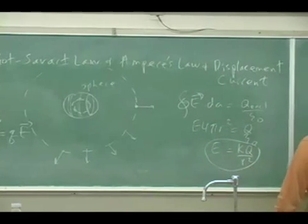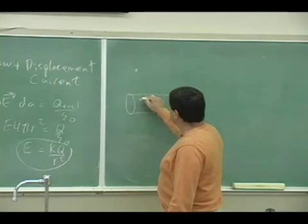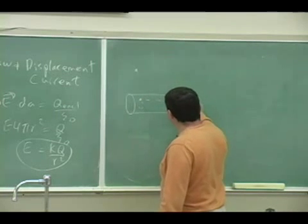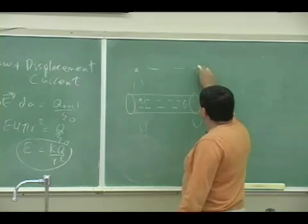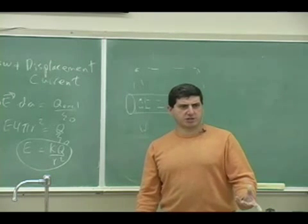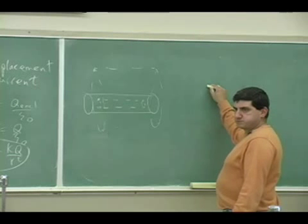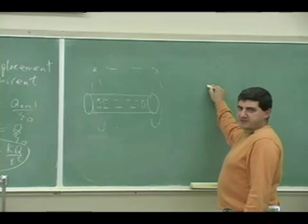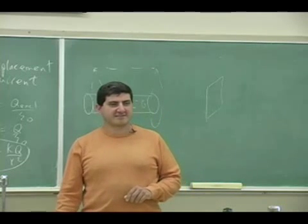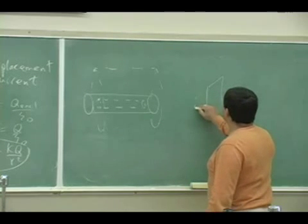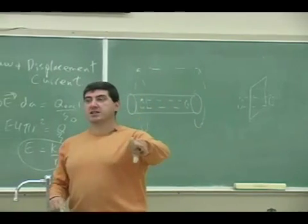Then the next kind of symmetry is cylindrical symmetry — how do you find the electric field here? You use a little Gaussian surface. And then there was one other symmetry we can use Gauss's law for — a sheet, a plate, using planar symmetry. So there are three symmetries for which Gauss's law allows you to find the electric field more quickly.